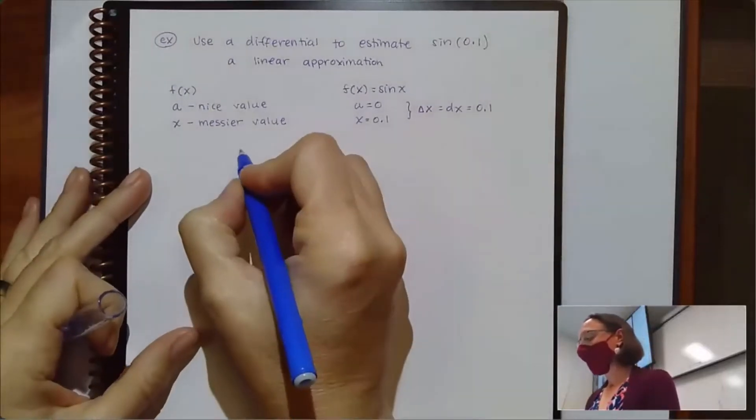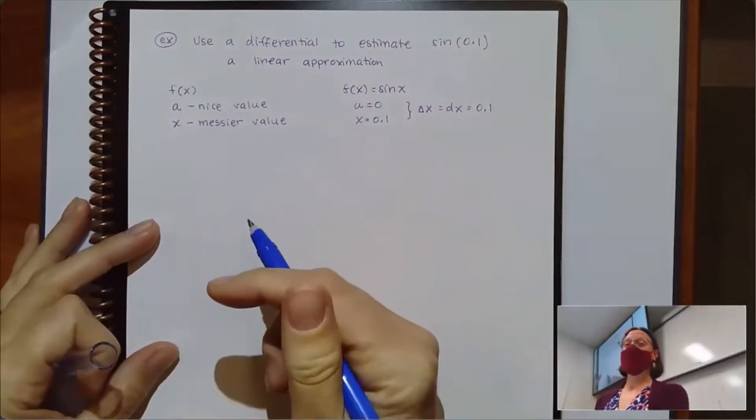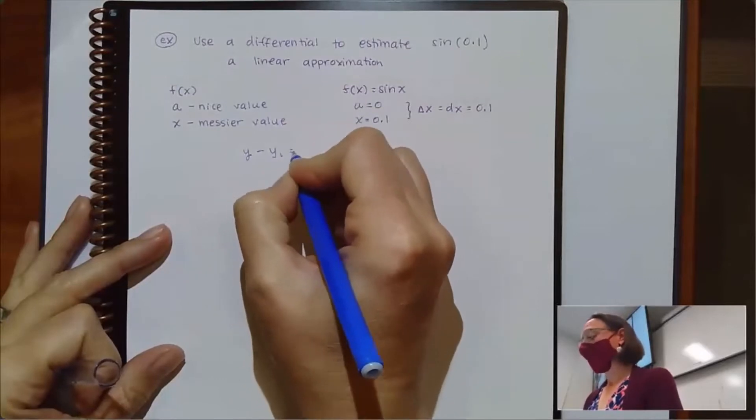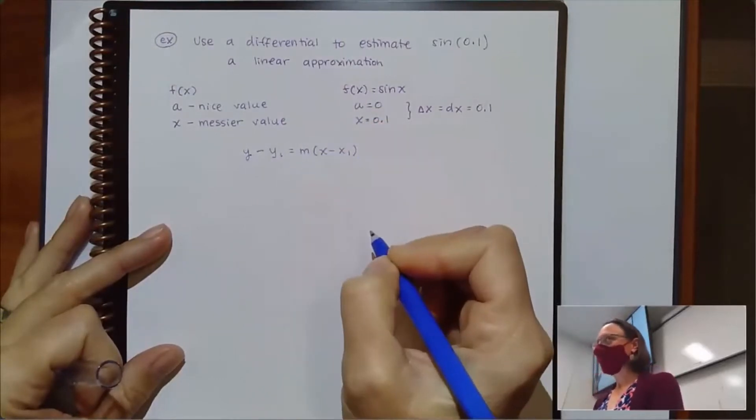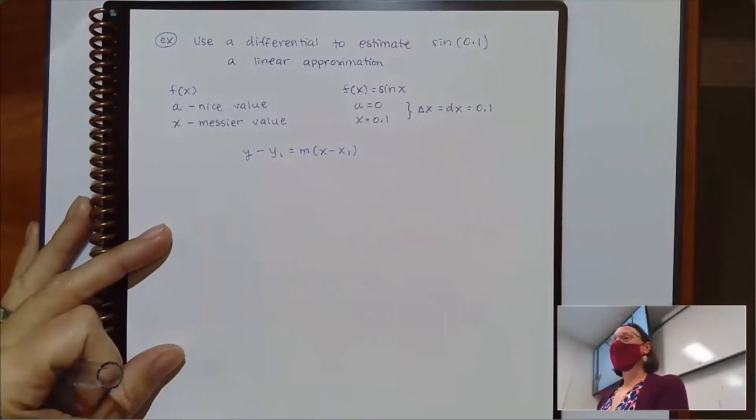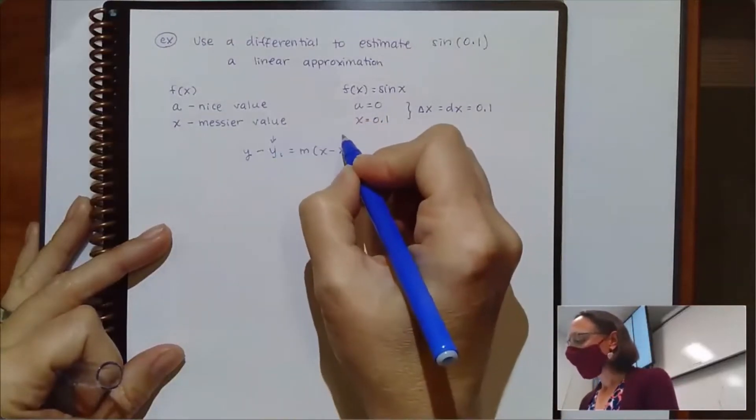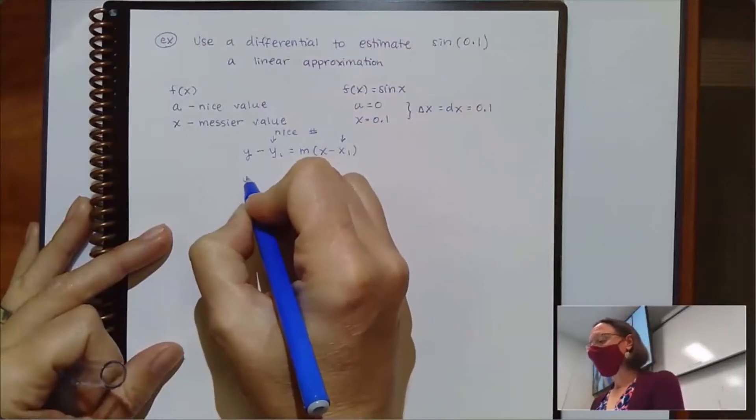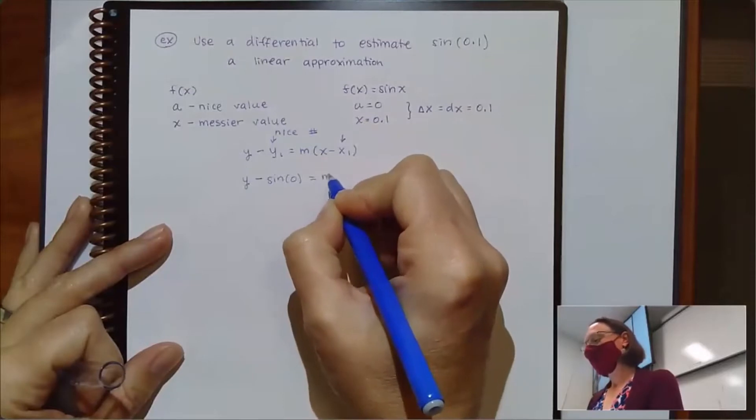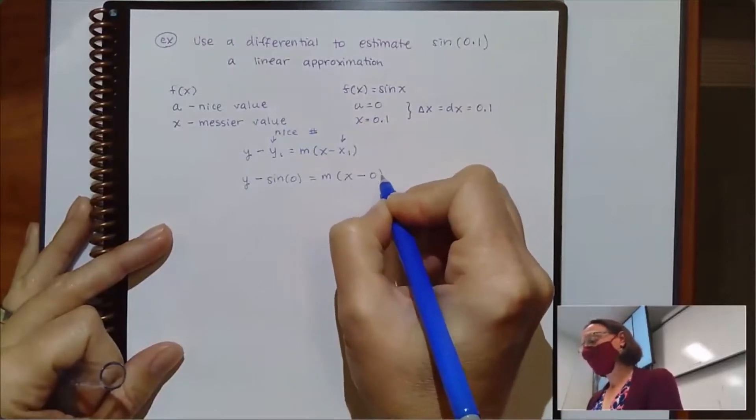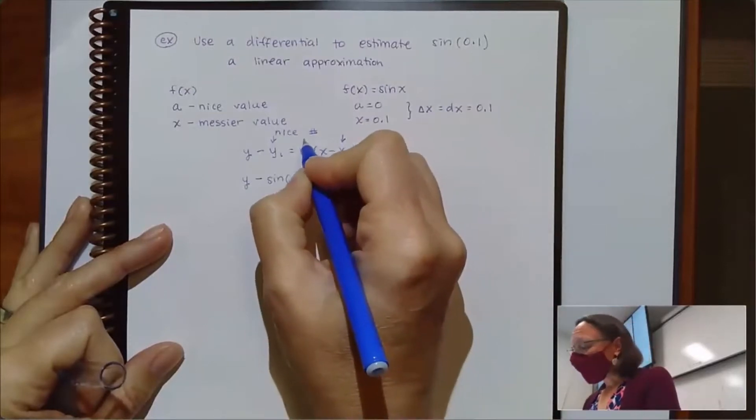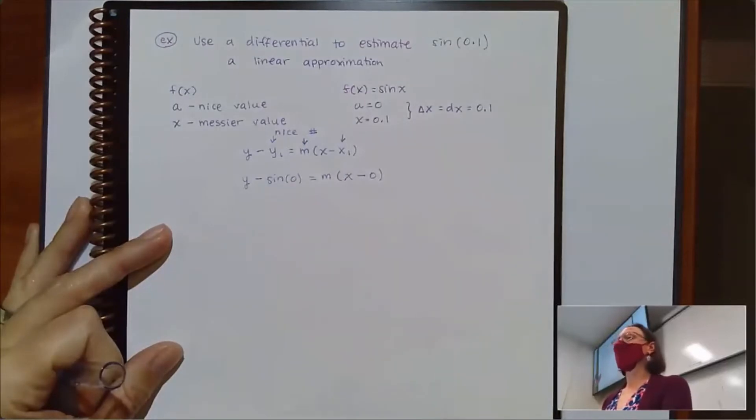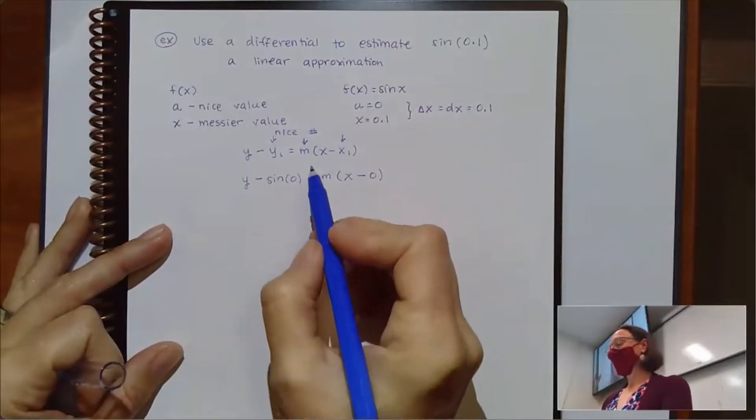So to use that differential to estimate or to use a linear approximation, I'm going back to we know how to find the equation of a tangent line, and that's all that's happening with a linear approximation. When we're talking about a linear approximation, we can think equation of a tangent line. So I'm like y minus y1 equals m times x minus x1. The thing that we do to frame this as a linear approximation is that these values should come from using the nice number, which means this would look like y minus sine of 0 equals that slope times x minus 0.